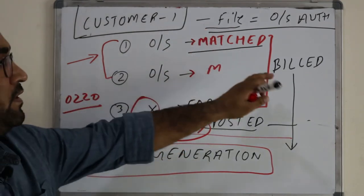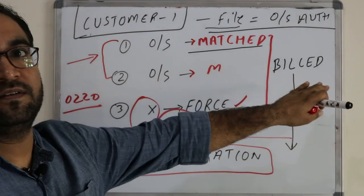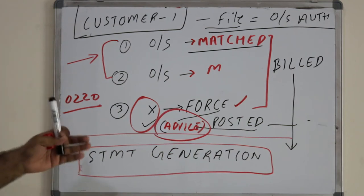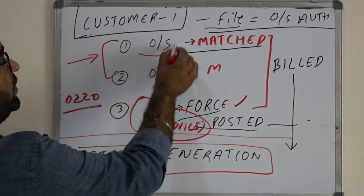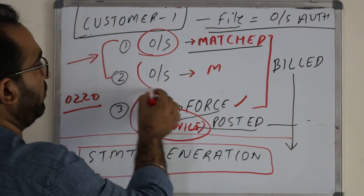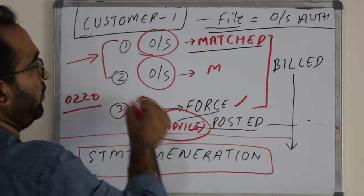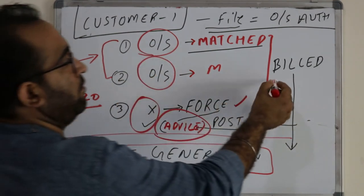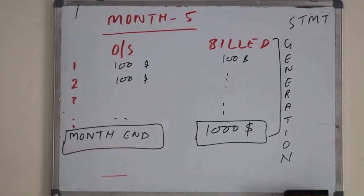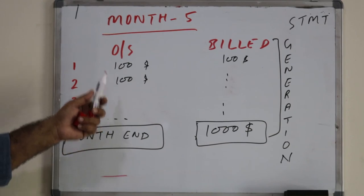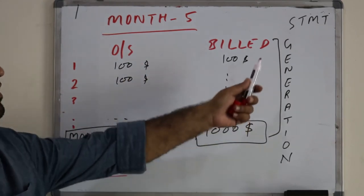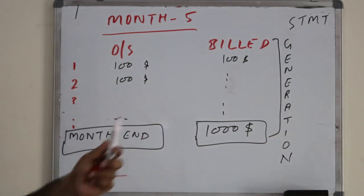Once the processing of the incoming file is completely done in the CMS, all transactions are marked with billed status. Now in your internet banking, you will see that whatever outstanding transactions were there have been moved from the outstanding queue to the billed queue. The next step is to generate the statement.